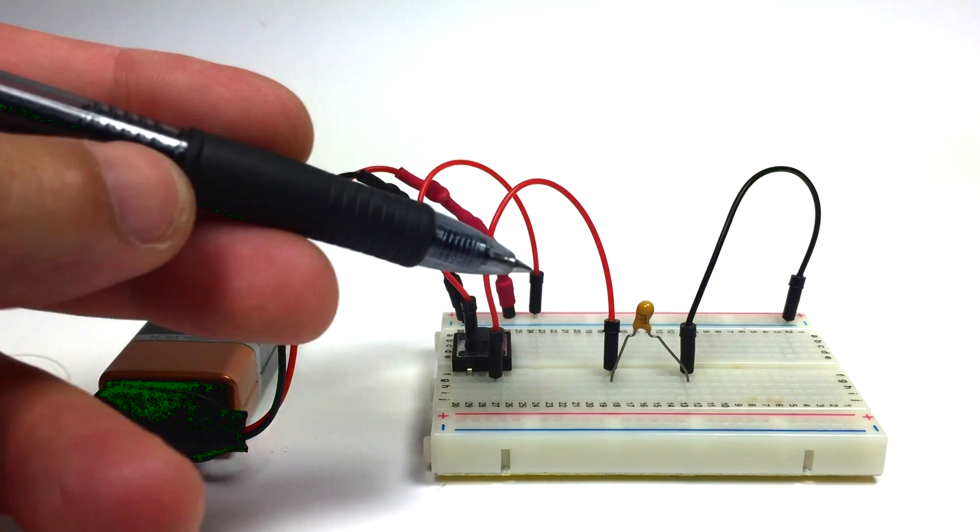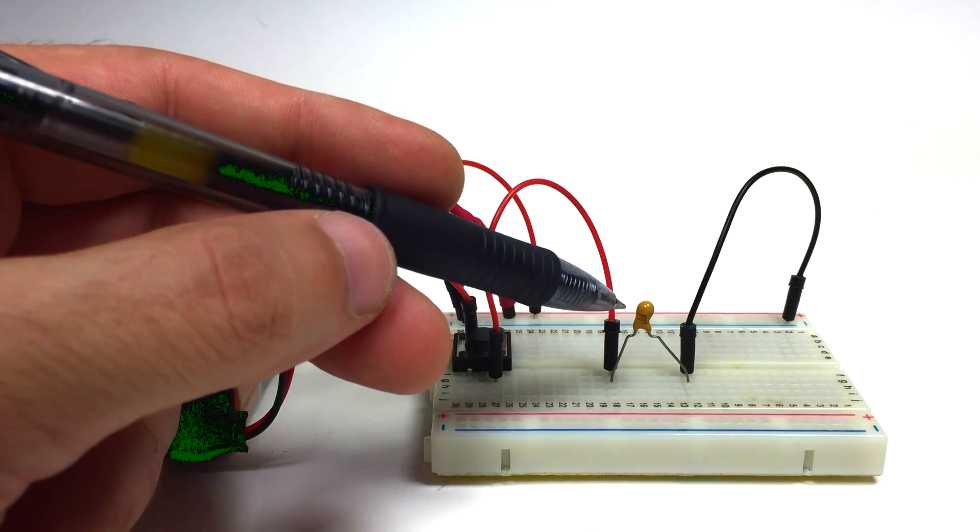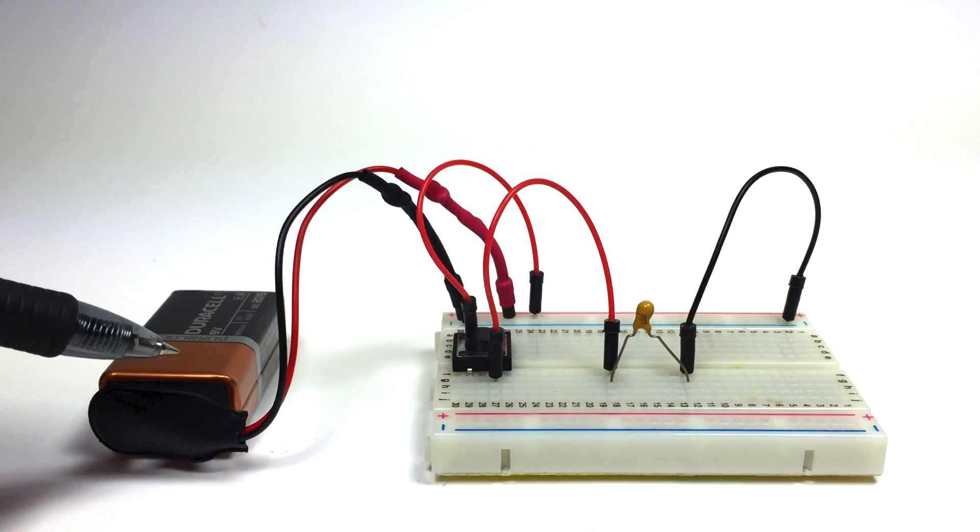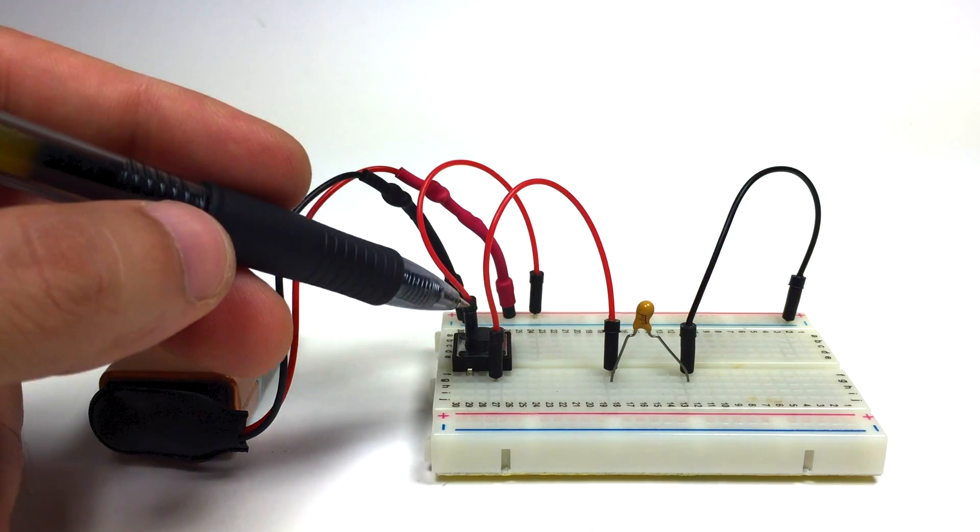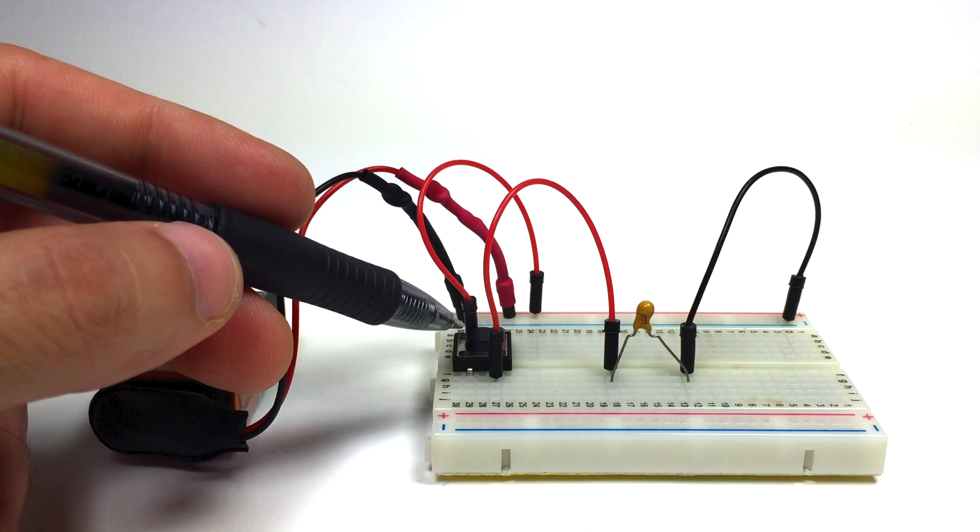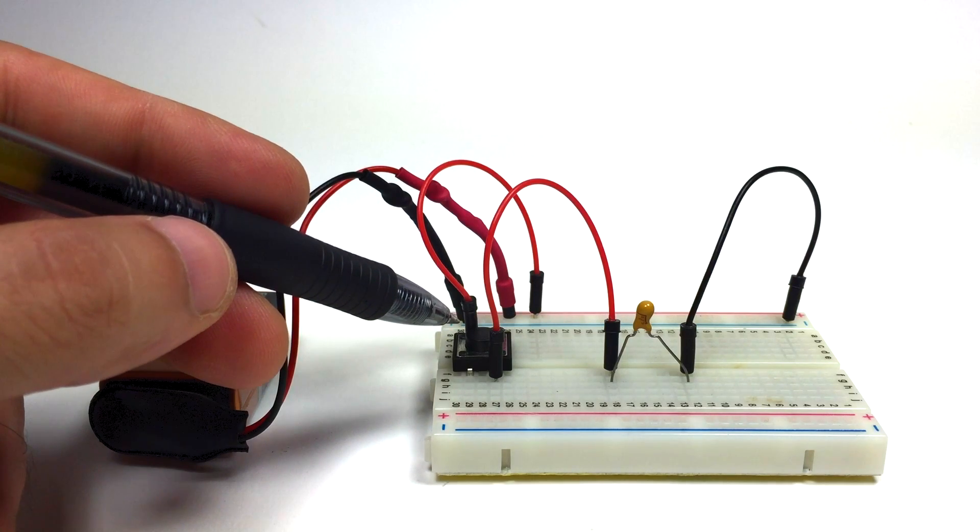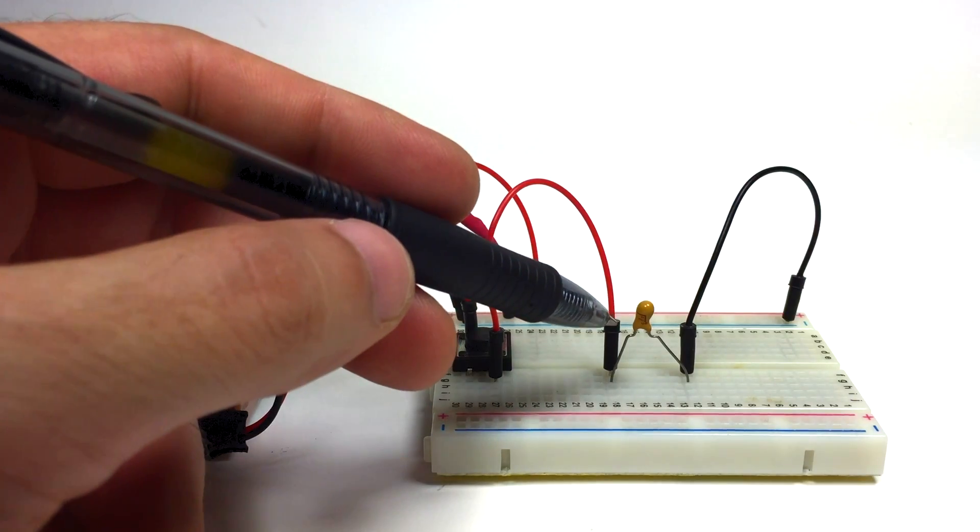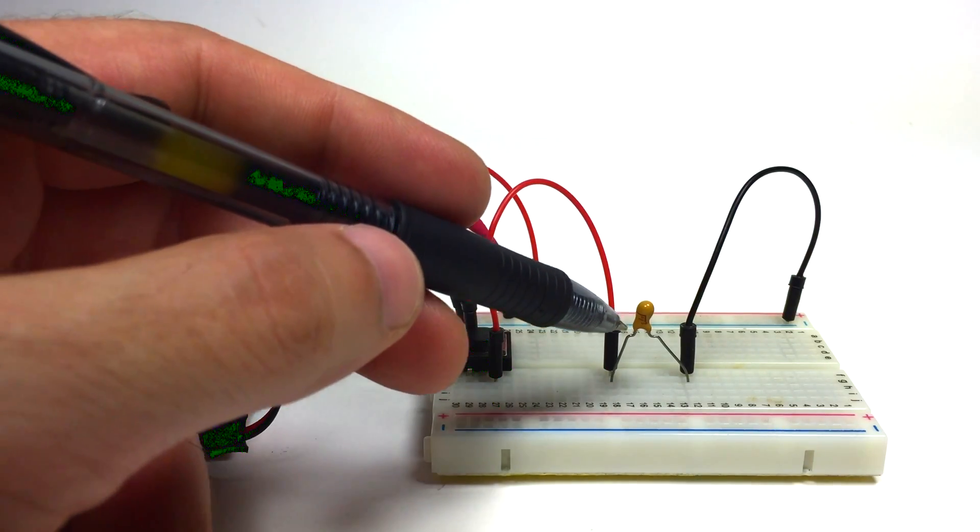So let me show you how I have this set up. I've got a tantalum capacitor inserted in the breadboard, and I've got a 9 volt battery connected up to the power rails of the breadboard. And from the positive rail, I have a jumper wire connecting to a push button, and another jumper wire connecting from the push button to the negative side of the tantalum capacitor.